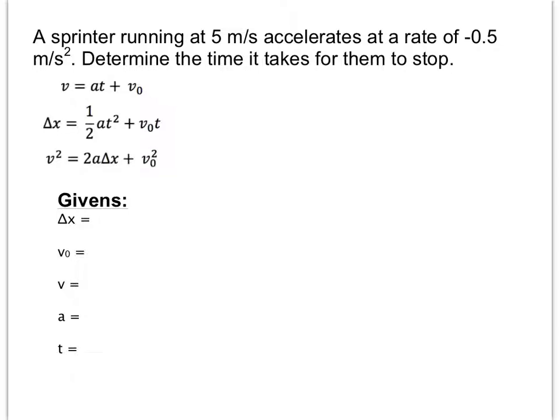Okay, so in this first problem, we've got a sprinter running at five meters per second, and they're accelerating at a rate of negative 0.5 meters per second squared, and we want to determine the time it takes for them to stop. Now, right off the bat, what we want to do is compile a list of givens, and what I like to do is figure out what we're actually solving for. This problem says that we're solving for a time, and what I'll do now is put a question mark for time in our givens.